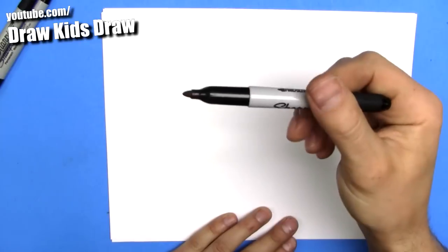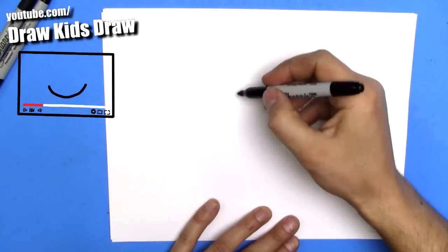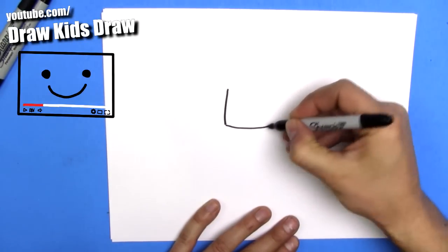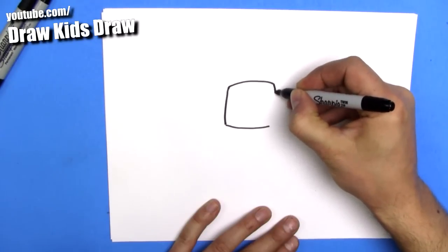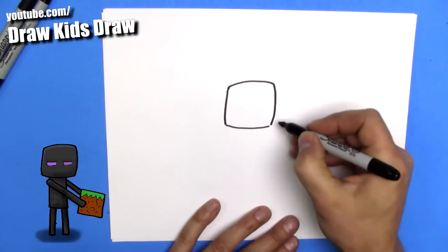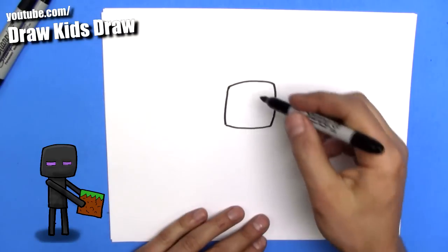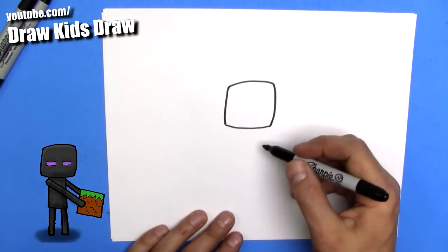First, we're going to start off with a medium point Sharpie marker, and we're going to draw like this. There we go. So I did kind of a square, which is a little bit bulgy, just for the cuteness factor.